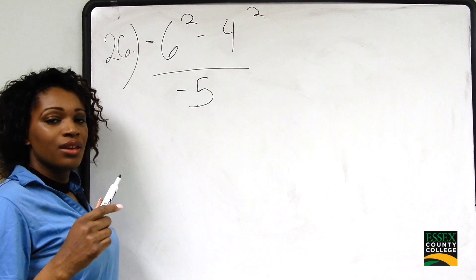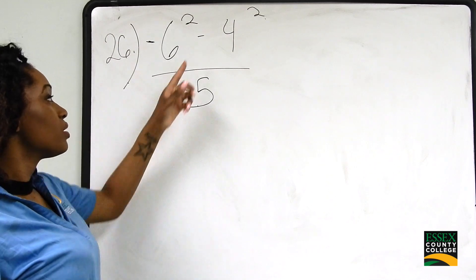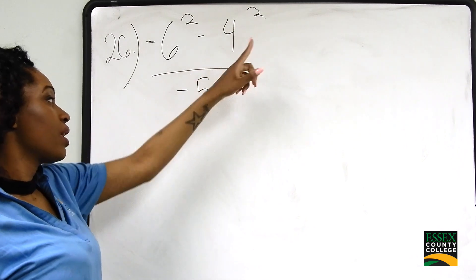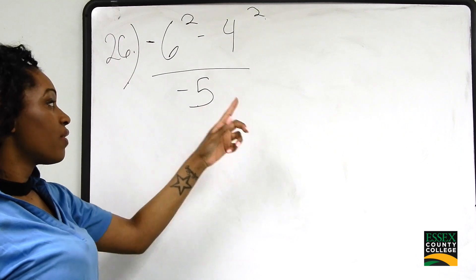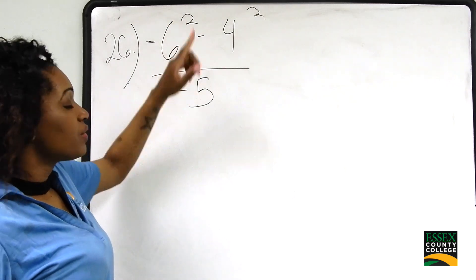Question number 26 on the Math 086 final review. We're taking negative 6 squared, subtracting 4 squared, and dividing all of that over negative 5. So here we're going to do negative 6 squared...